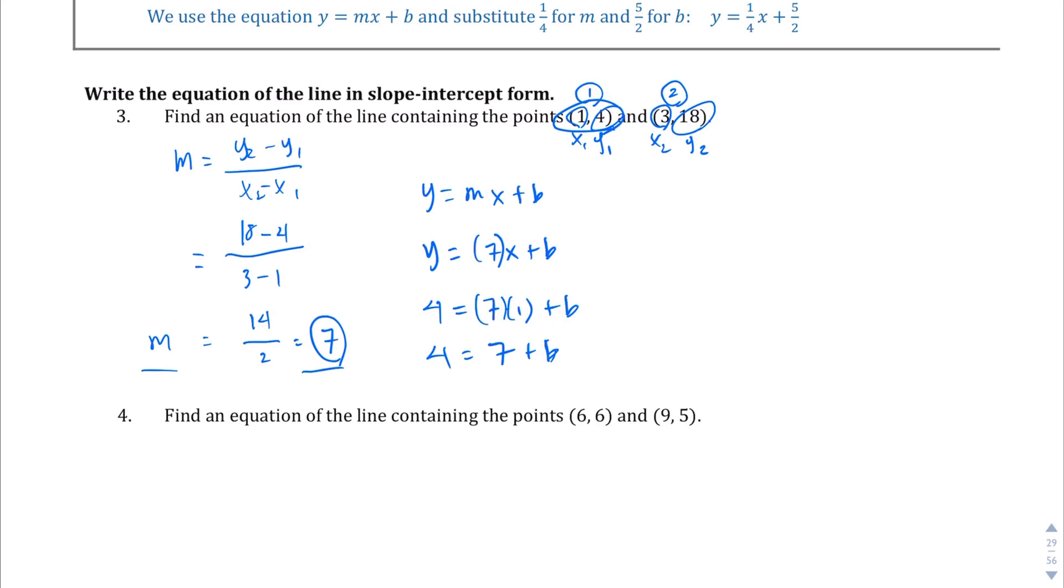4 equals 7 plus b. Subtract 7 from both sides. I'm running out of room. This makes that go away. Okay, 4 minus 7 is negative 3 equals b. So, this is where we end up with as our y-intercept, and then we're just going to plug it into this equation we've been working with. So, y equals 7x, and then our y-intercept is negative 3, so minus 3. So, there is our final equation in slope intercept form.